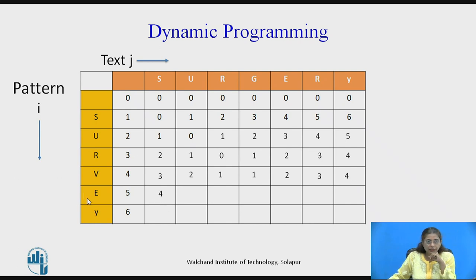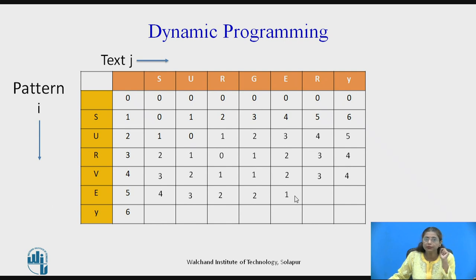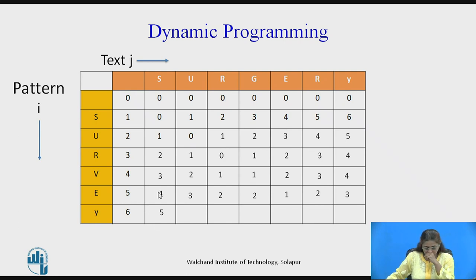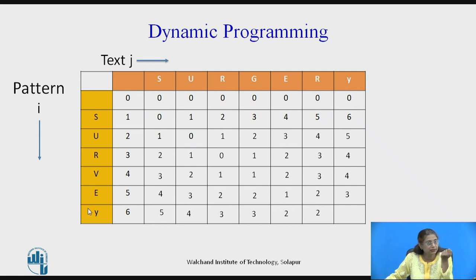For the 'e' column: 'e' and 's' not matching, minimum 3+1=4; 'u' and 'e' not matching, 2+1=3; 'r' and 'e' not matching, 1+1=2; 'g' and 'e' not matching, 1+1=2; 'e' and 'e' — matching, take diagonal: distance is 1; 'r' and 'e' not matching, 1+1=2; then 3. For the 'y' column: 'y' and 's' not matching, 4+1=5; 3+1=4; 'r' and 'y', 2+1=3; again 2+1=3; 'e' and 'y', 1+1=2; 'r' and 'y', 1+1=2; 'y' and 'y' — matching, take diagonal: distance is 2.